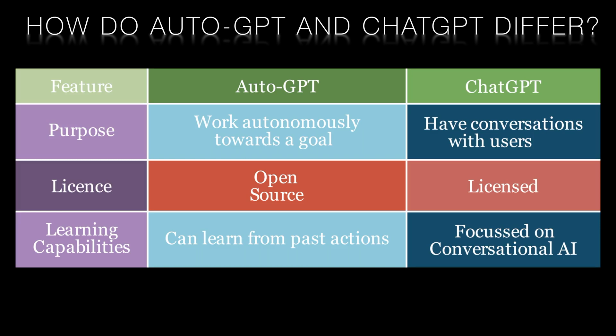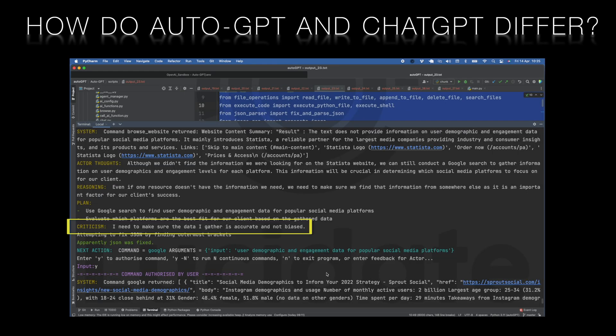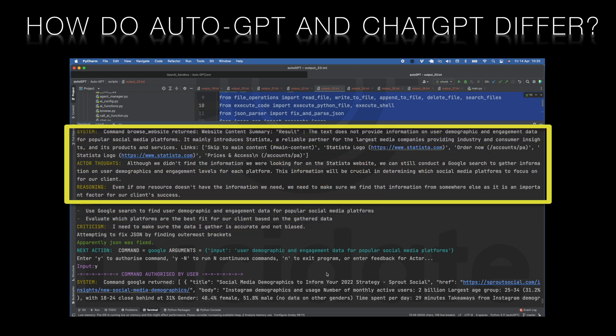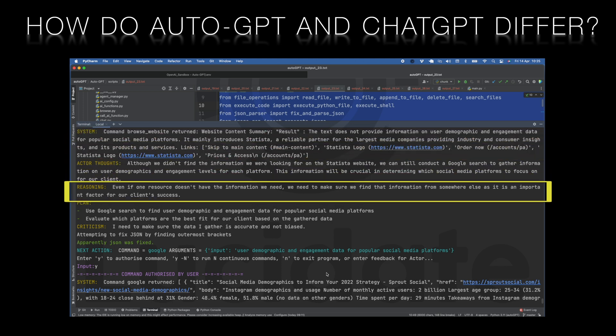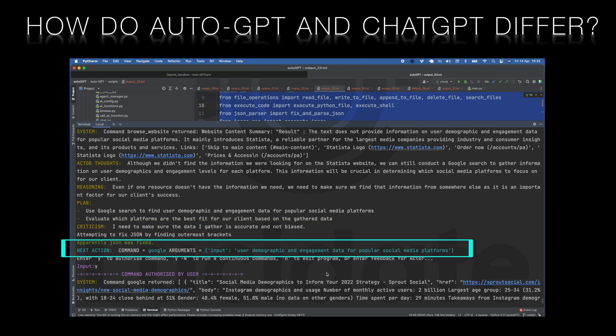Another significant difference between the two is their learning capabilities. Auto-GPT has long-term and short-term memory, allowing it to learn from its past actions and improve its performance over time. On the other hand, Chat-GPT's learning is primarily focused on conversational AI, allowing it to generate more natural sounding responses over time. Auto-GPT is also self-critical — it externalizes the risks of its actions and has a high degree of awareness of whether the answer it received to a question was satisfactory, and if not, it will ask a different question or look in a different place for the answer.